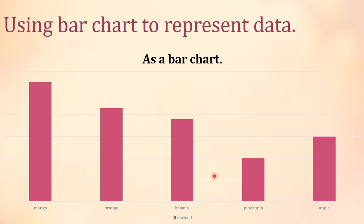Next is apple, and then pineapple — you can see pineapple has the smallest bar. This is how we use a bar chart to show which fruit is most liked and least liked. Play this video again and again so you don't get confused. If you do, feel free to comment in the discussion box. Prepare for your seventh week test — it's coming up. See you in another tutorial video, bye!